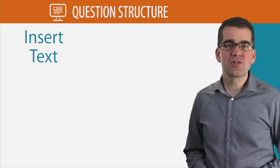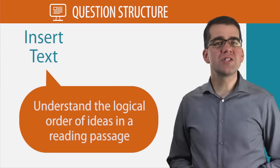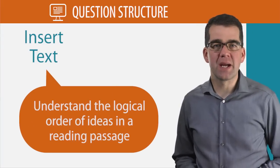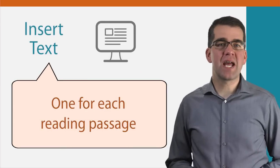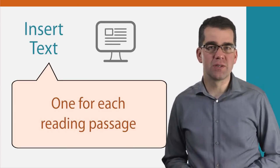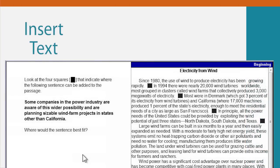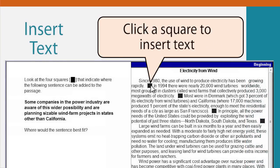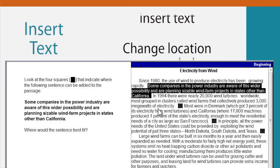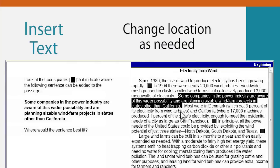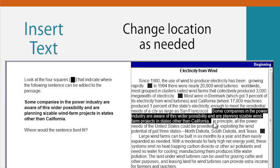The insert text questions are designed to show that you understand the logical order of ideas in a reading passage. In the reading section, every reading passage has one insert text question, but instead of choosing from a list of four choices like with most reading questions, you will click on one of the four black squares to insert the text into the paragraph. During the real test, you can change the location of the sentence as many times as you need to, so you can see how it works in each of the four places.